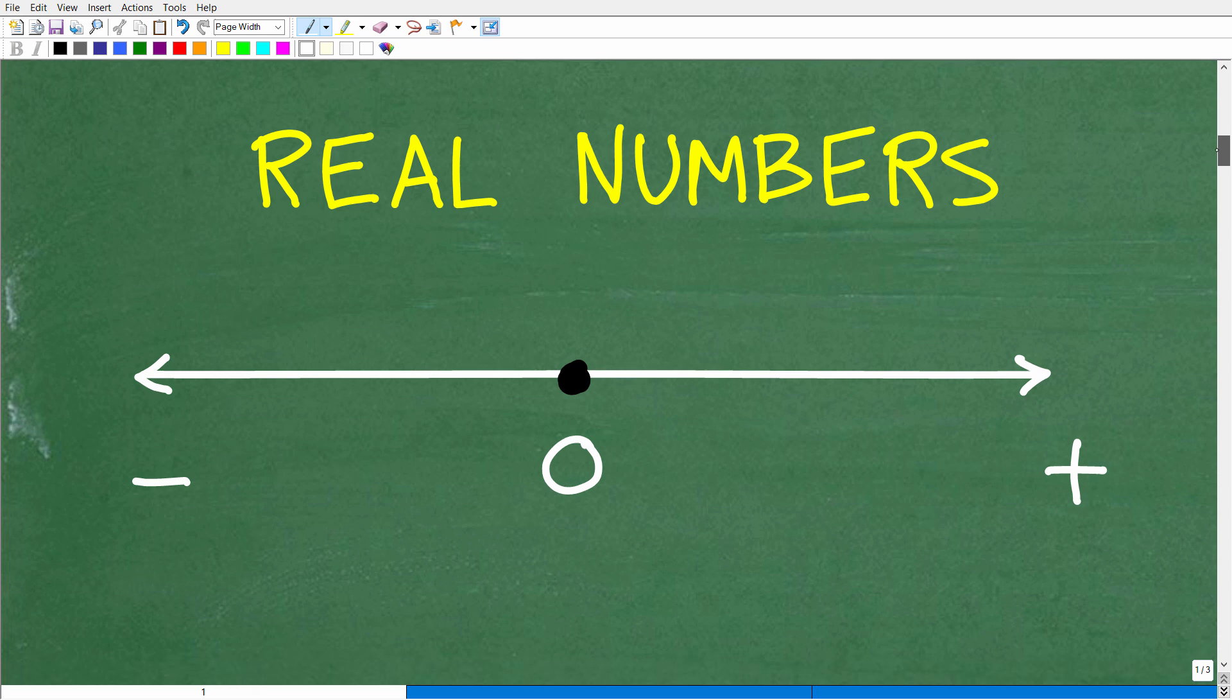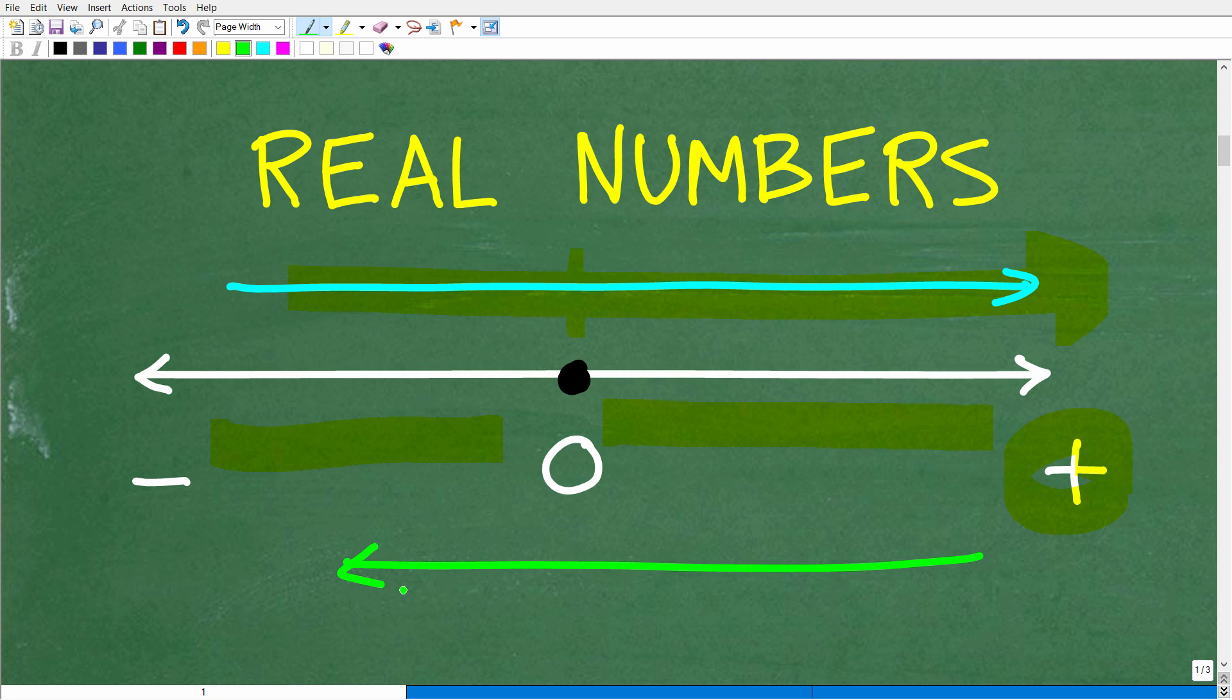All right, so we're talking about the real number system. When we're talking about real numbers, it's a good idea to think of the real number line. Basically, it's just a line with zero in the middle. And as we go from left to right, numbers get larger. This is the main idea here. To the right of zero is going to be positive numbers. So all these numbers here are positive. To the left of zero, in this direction, all the numbers are negative. But the main concept here, as we go from left to right, numbers are increasing. As we go from right to left, numbers are decreasing.